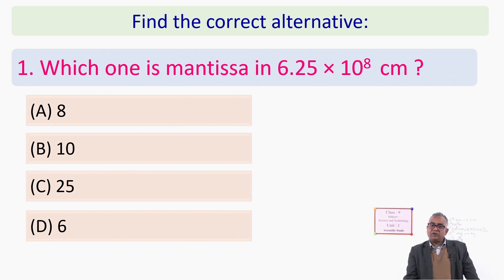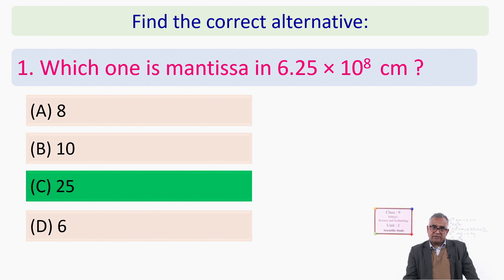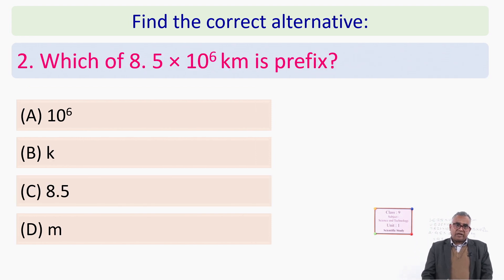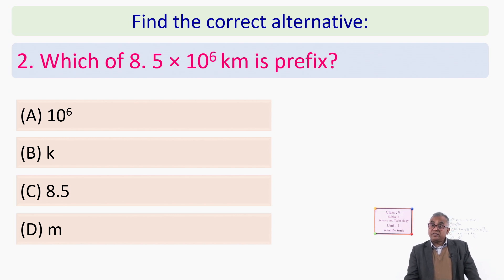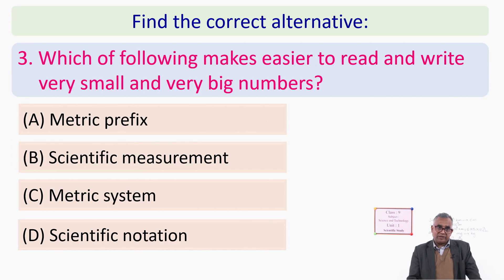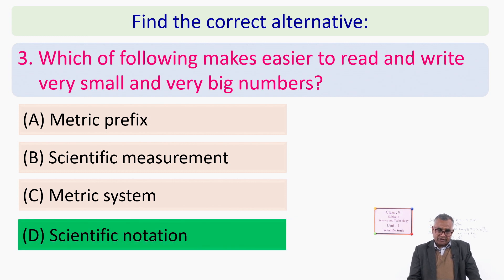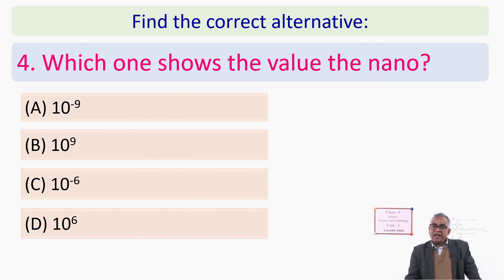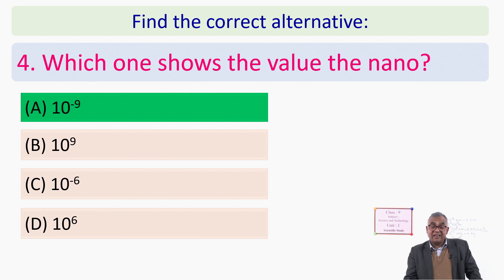Now some question answers. Which one is the mantissa in 6.25 × 10⁸ centimeters? It is 25 — the mantissa is the number after the decimal. Next question: which part of 8.5 × 10⁶ kilometers is the prefix? That is K — kilo — because the prefix is the word used before the main unit. Which notation makes it easier to read and write very small and very big numbers? That is scientific notation. Which one shows the value of nano? That is 10 to the power minus 9.